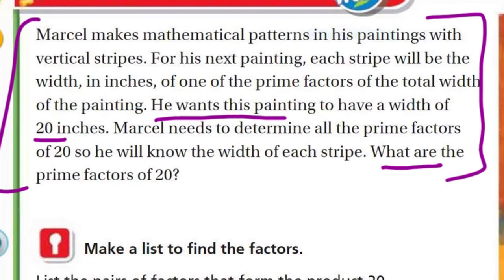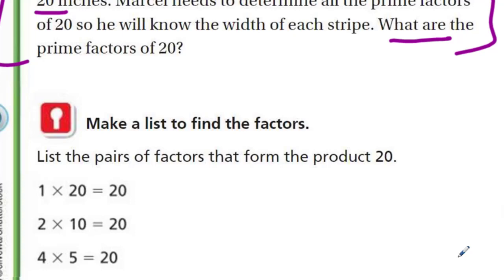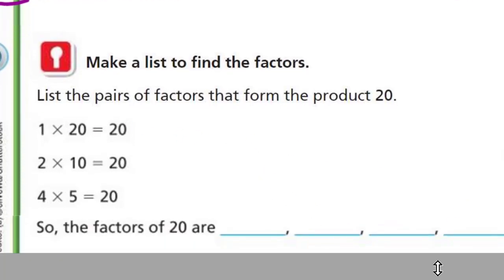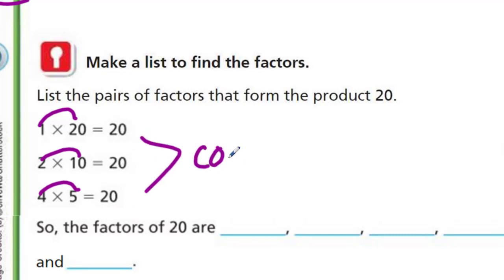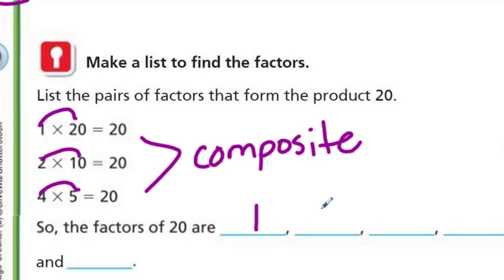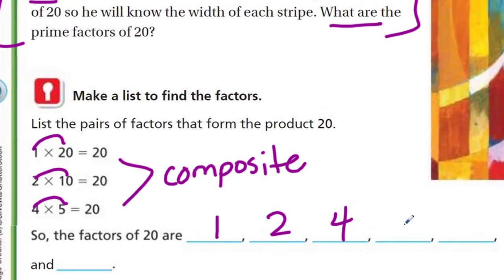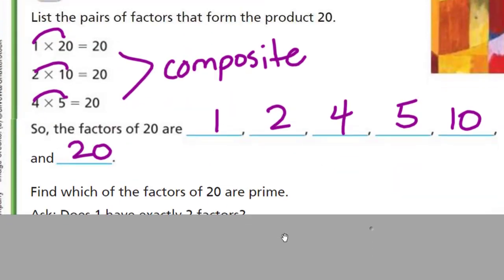Let's go ahead and find the prime factors of 20. The book says to make a list to find the factors — the pairs of factors that form the product 20. So: 1 times 20 is 20 — that's the identity property of multiplication. 2 times 10 is 20. 4 times 5 is 20. So the factors of 20 are 1, 2, 4, 5, 10, and 20. We definitely know 20 is a composite number because it has more than two factors. Now, find which of the factors are prime.